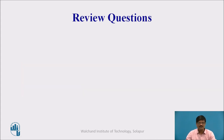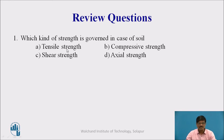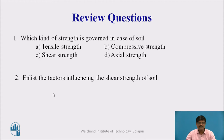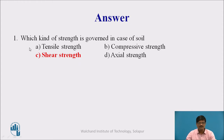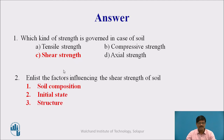Based on these discussions, here are some review questions. First: which kind of strength is governed in case of soil? Options: tensile strength, compressive strength, shear strength, and axial strength. Second: analyze the factors influencing the shear strength of soil. The answer to the first question is C — shear strength, as it is the major strength possessed by soil. The factors influencing shear strength are: soil composition, initial state, and structure.